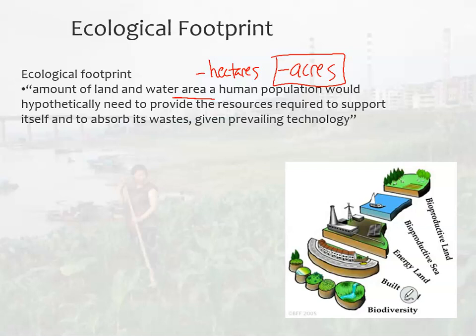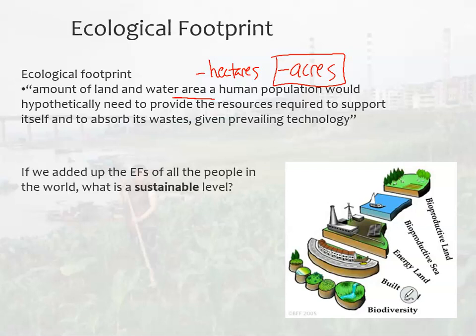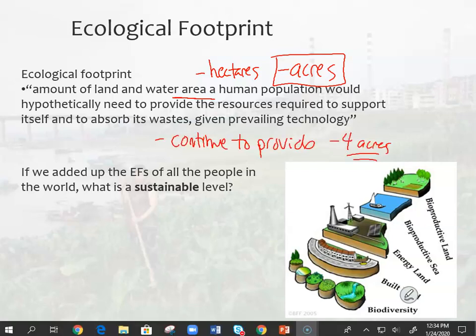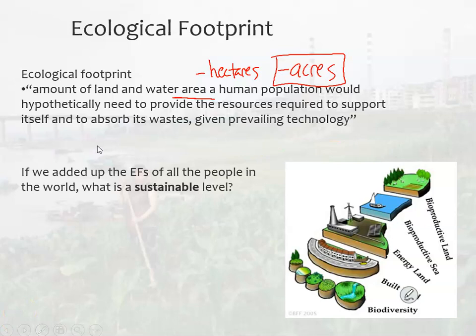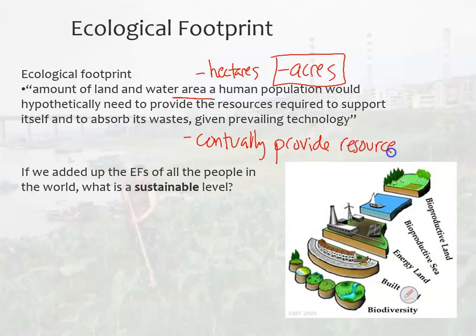You can calculate your own ecological footprint — based on your lifestyle, your driving, energy use, food, and so forth — to find out how much land and water is needed to support your lifestyle. What's really great about this is it makes sustainability much more concrete. This area of land and water can continually provide resources — in other words, it's renewable resources.